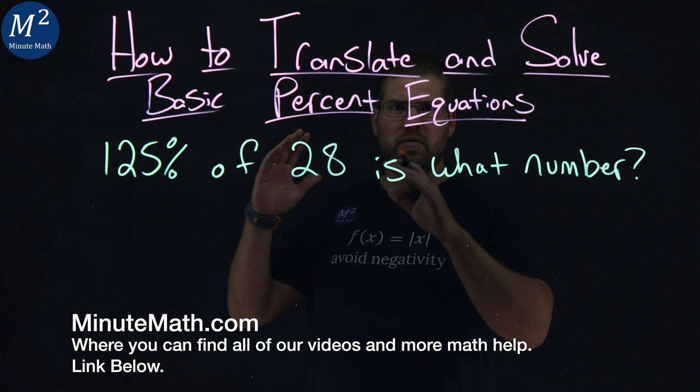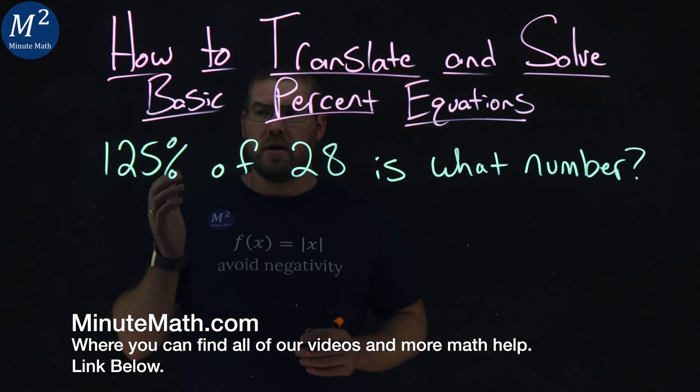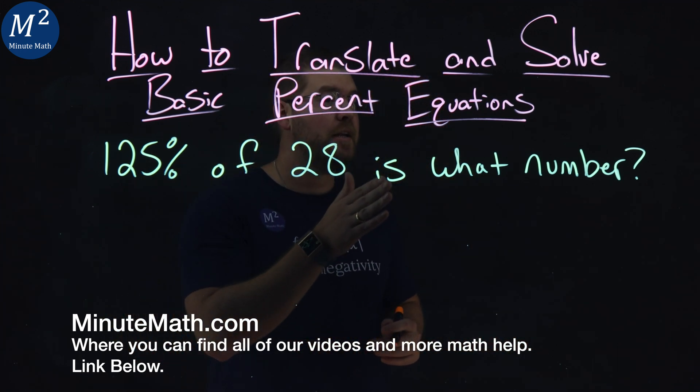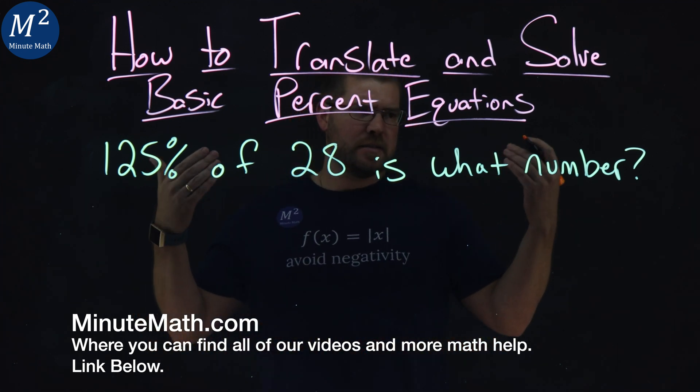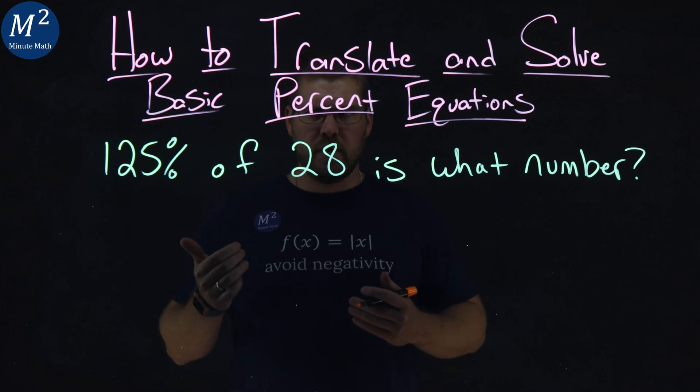We're given this statement here: 125% of 28 is what number? Let's see if we can take this question and turn it into a mathematical statement.